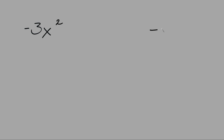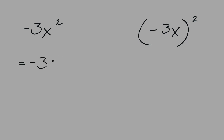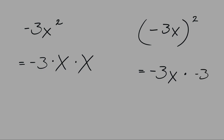I wanted to explain the difference between negative 3x raised to the power of 2 and negative 3x in brackets raised to the power of 2. Without brackets, the exponent of 2 only applies to the variable beside it, so it means negative 3 times x times x. With brackets, the power of 2 applies to everything within the brackets, so it means negative 3x times negative 3x. Negative 3 times negative 3 is positive 9, and x times x is x squared.